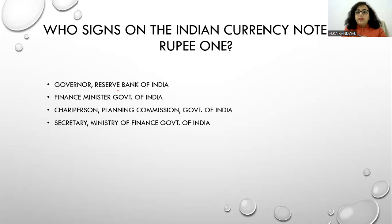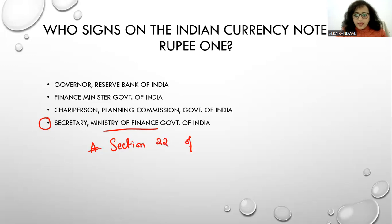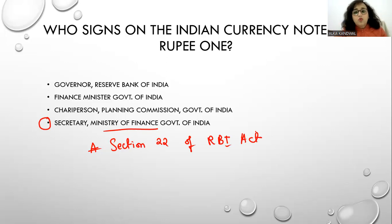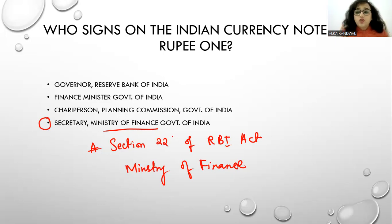Who signs the Indian currency note of Rupee one? It is the Secretary, Ministry of Finance, Government of India, under Section 22 of the RBI Act. RBI has the sole right to issue currency notes of all denominations except the one-rupee note. The one-rupee note is signed by the Secretary, Ministry of Finance, and is issued by the Ministry of Finance.